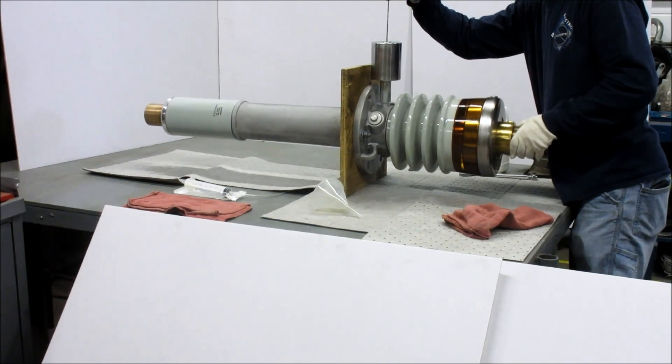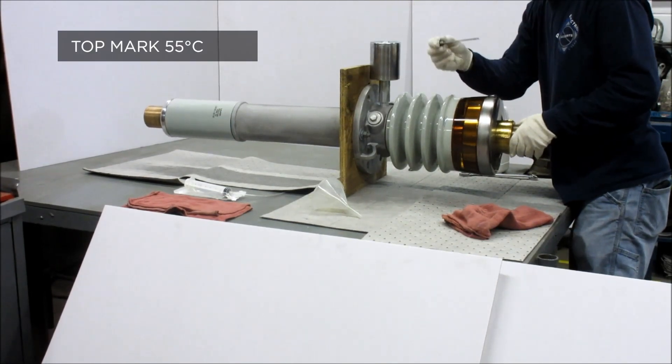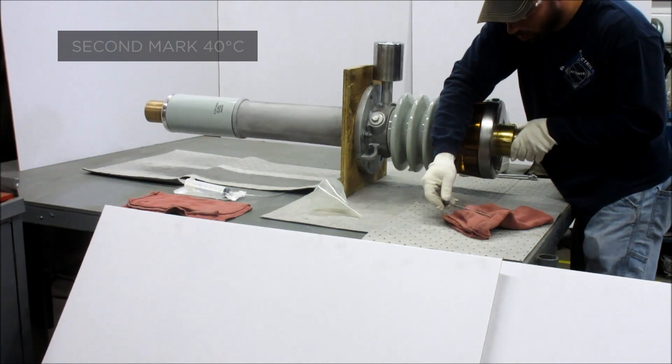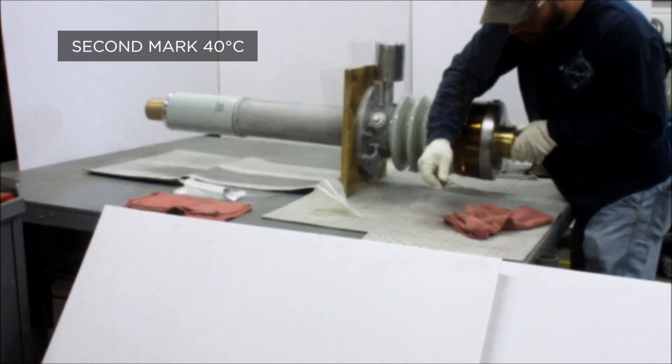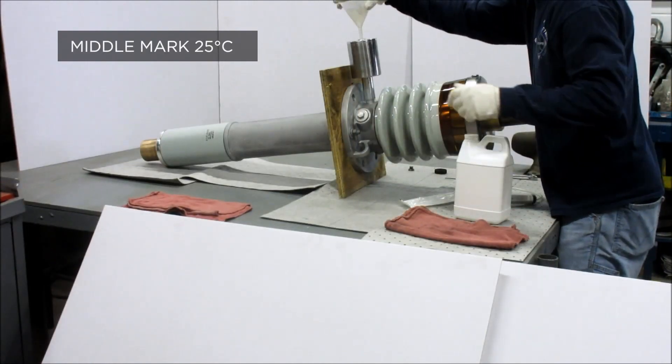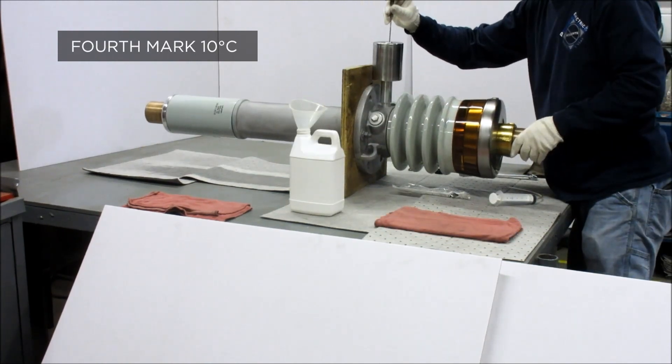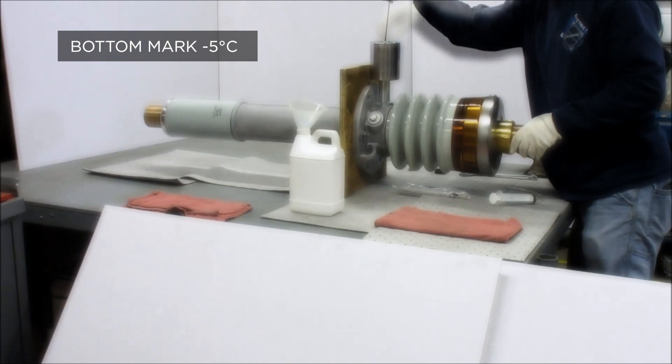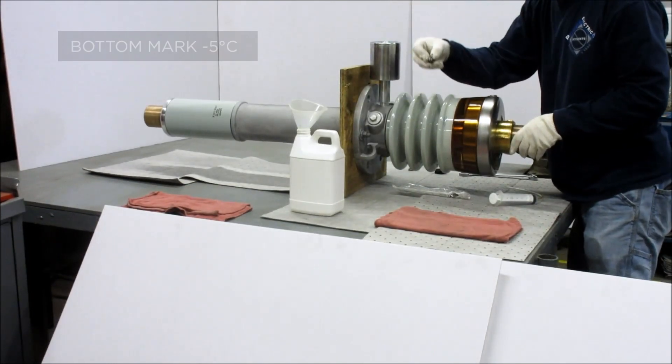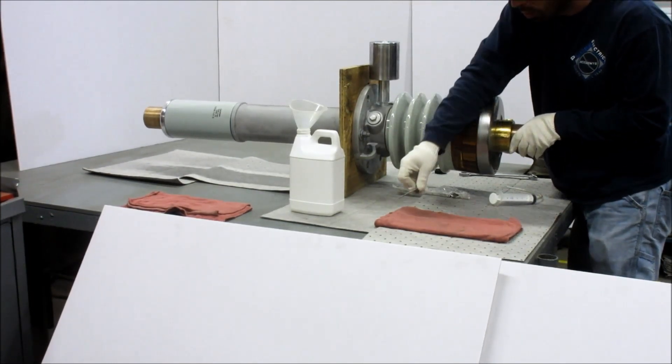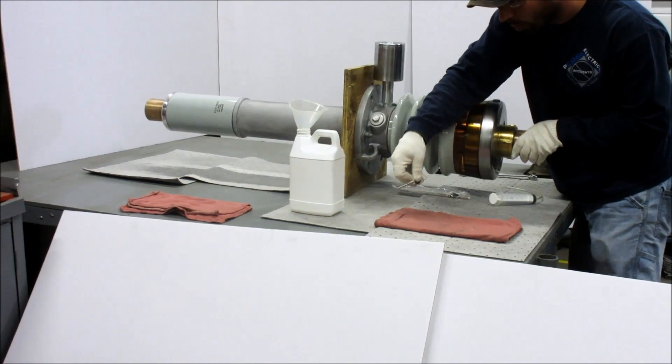Use the dipstick to measure the oil level. The top mark is for 55 degrees Celsius, the second for 40 degrees Celsius, the middle for 25 degrees Celsius, the fourth for 10 degrees Celsius, and the bottom for negative 5 degrees Celsius oil temperature. Interpolation between marks is not critical. If in doubt, use slightly less oil.